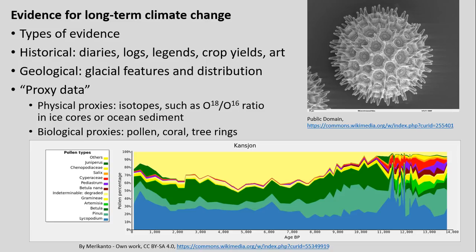Through geologic formations, glacial features and their distribution, rock features, and other physical proxies — measuring things like isotopes in rocks, ice cores, or ocean sediment — and even biological proxies like pollen, coral, or tree rings, all can add different pieces to this puzzle. We'll never fully understand exactly what past climates were like, but at least can get good analogs of what that's like.